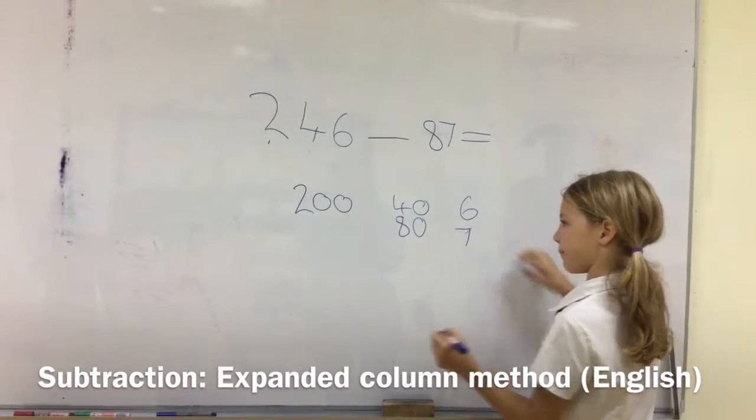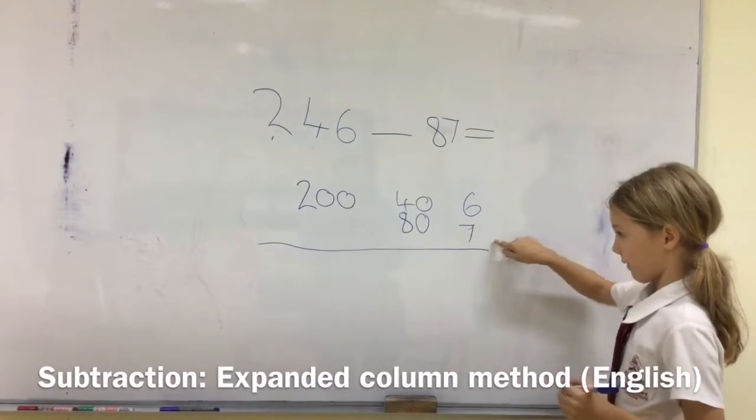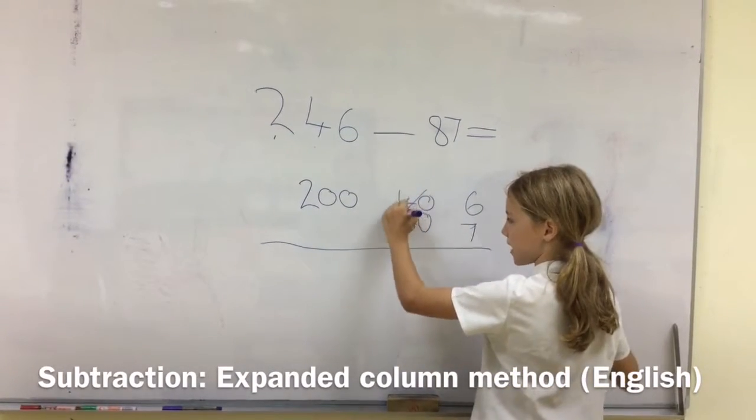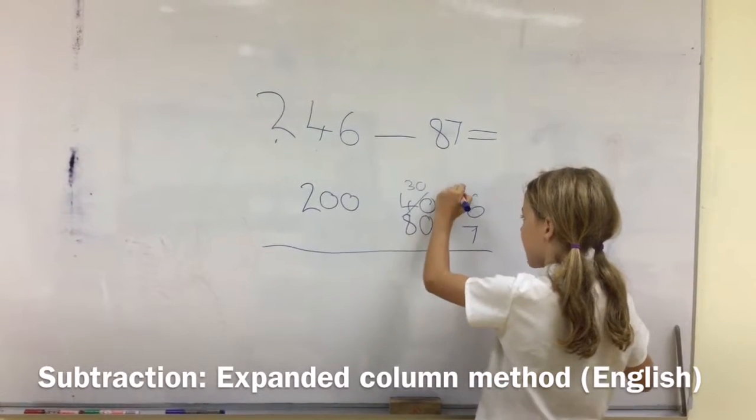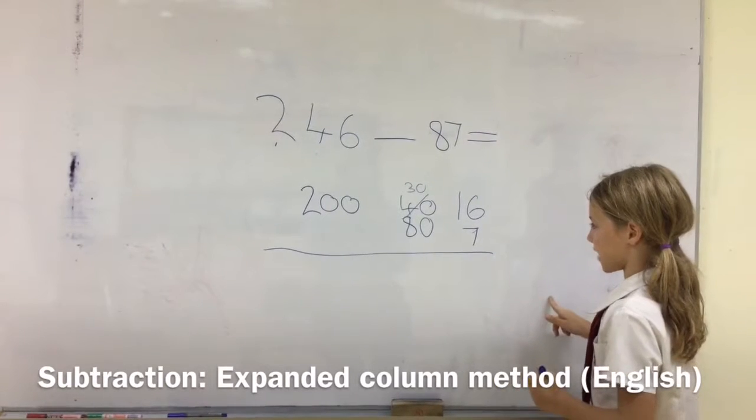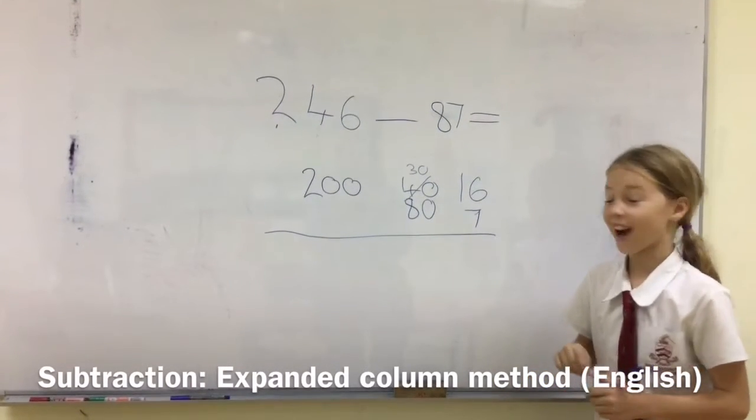First, we do 6 subtract 7, which we can't do. So, we take from 40, so that becomes 30, and we give it to there. So, 16 subtract 7 is 9.